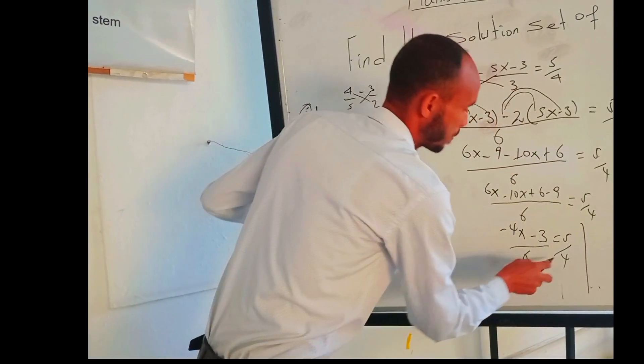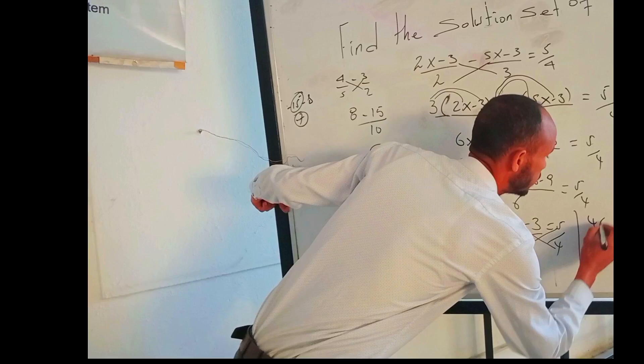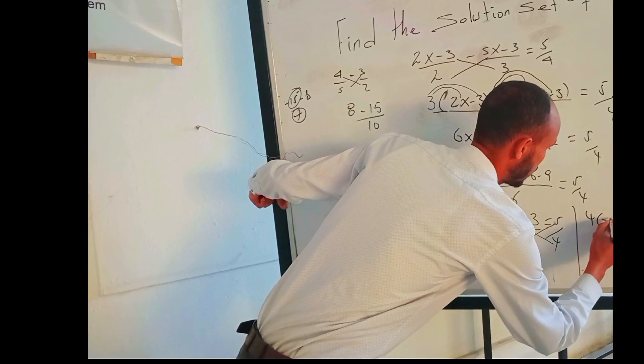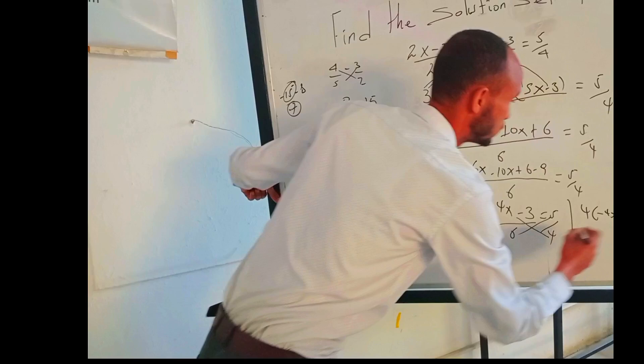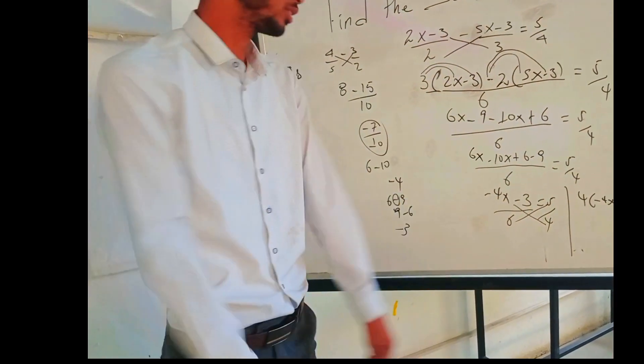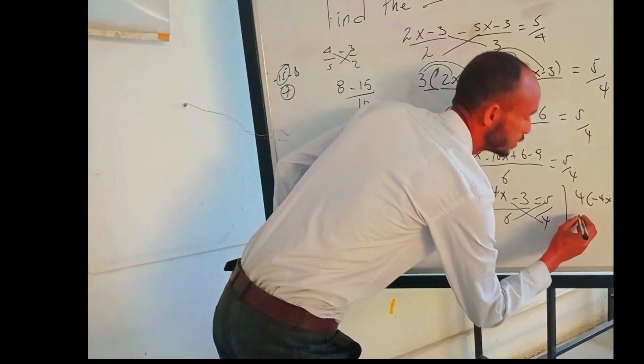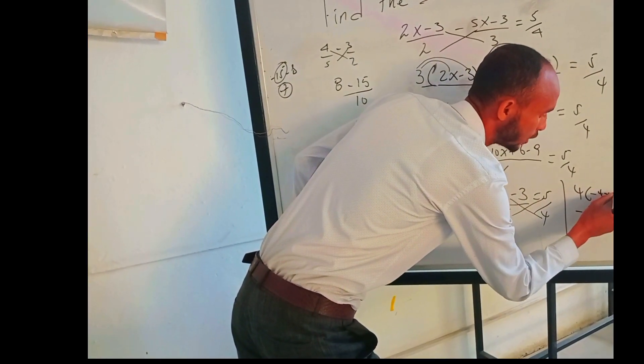The next step is applying cross product: 4 times (-4x - 3) which is equal to 30, because 6 times 5 is 30. Now 4 times -4x is -16x.